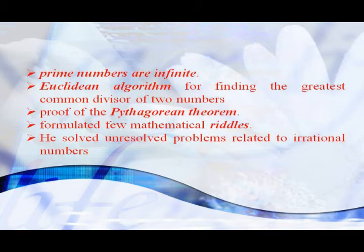Dividing an angle into three equal parts, making a double of a cube, and obtaining a square from a circle. He solved unsolved problems related to irrational numbers.